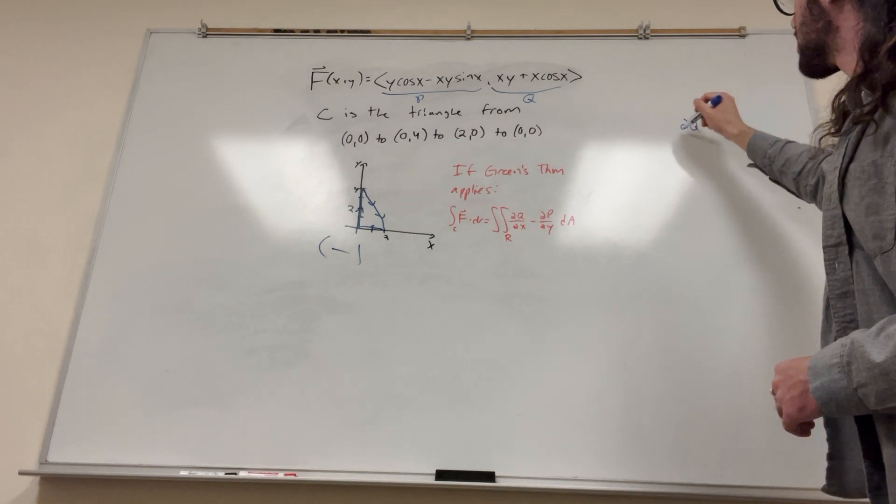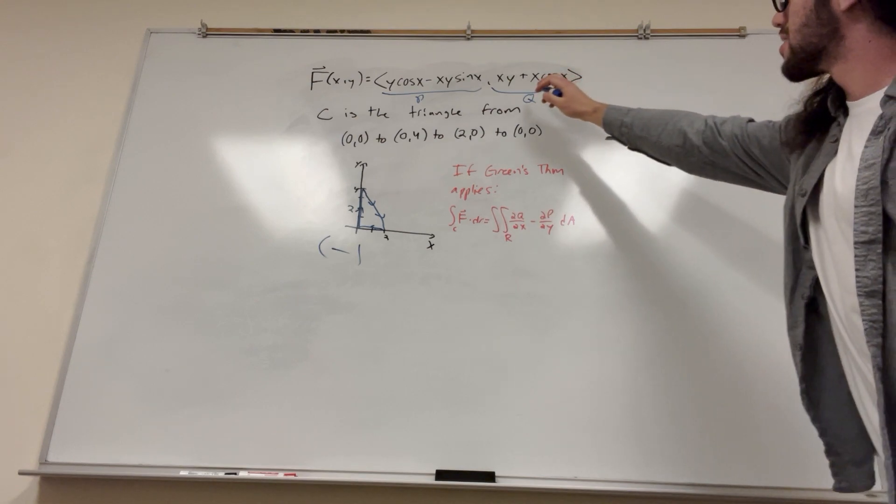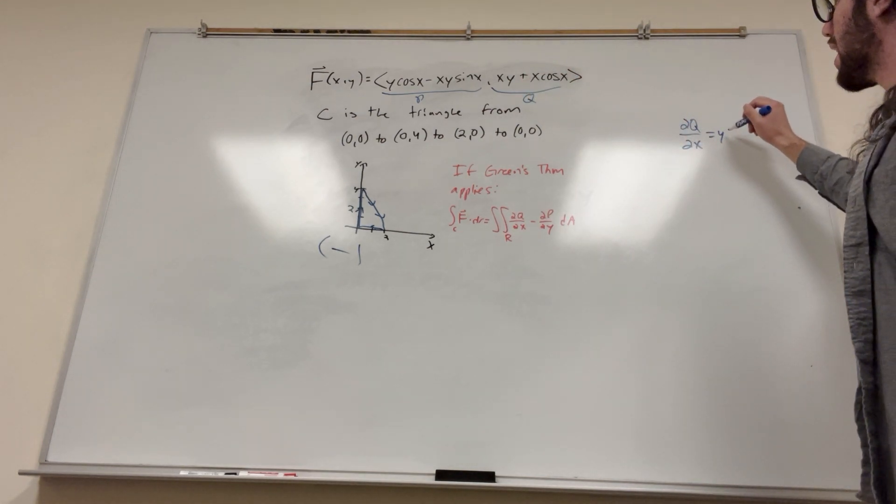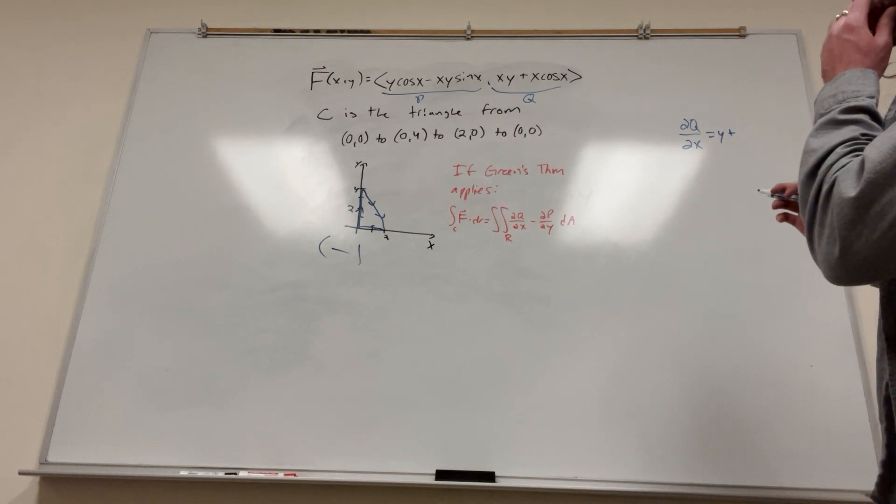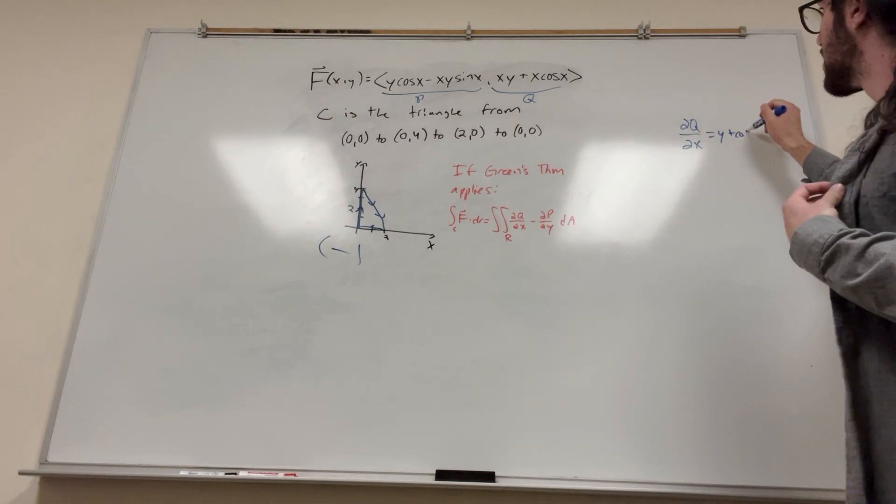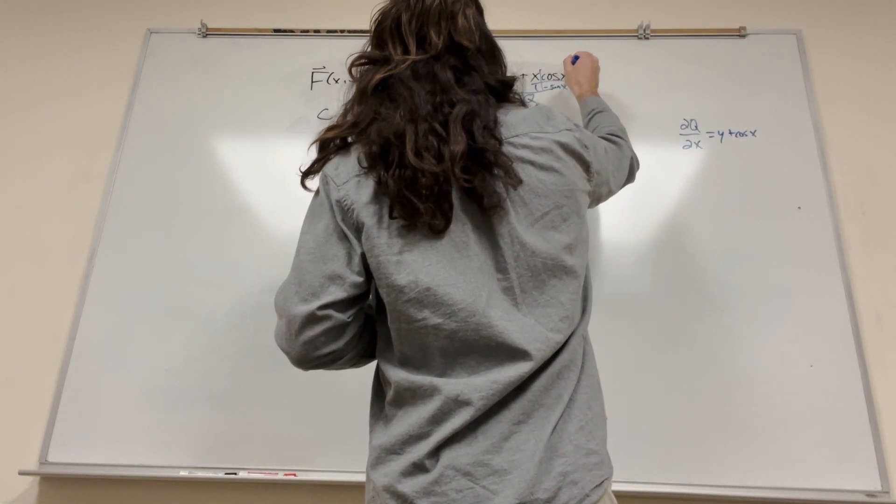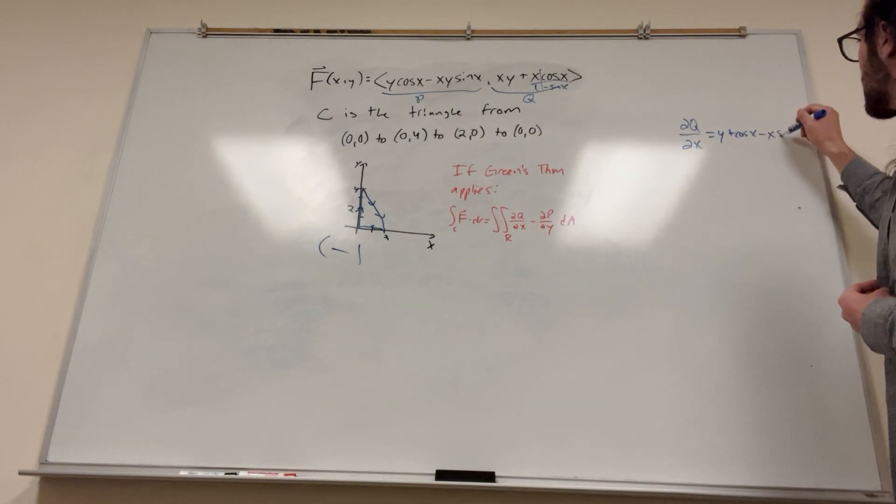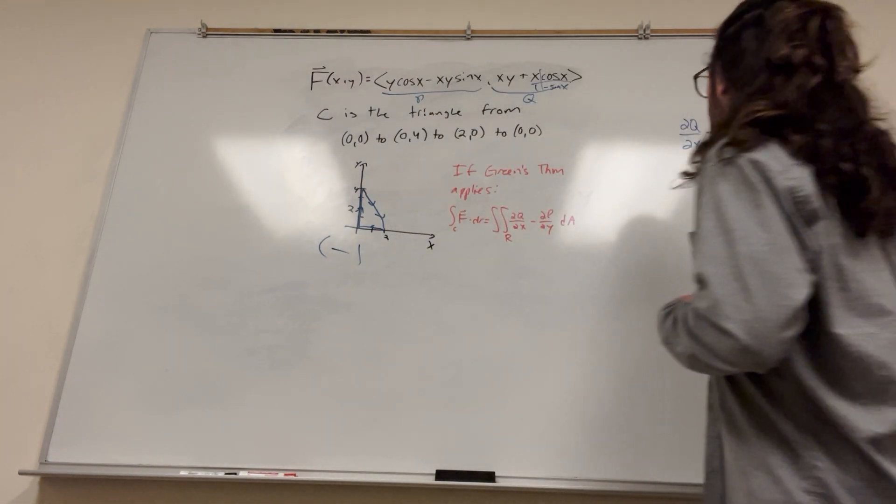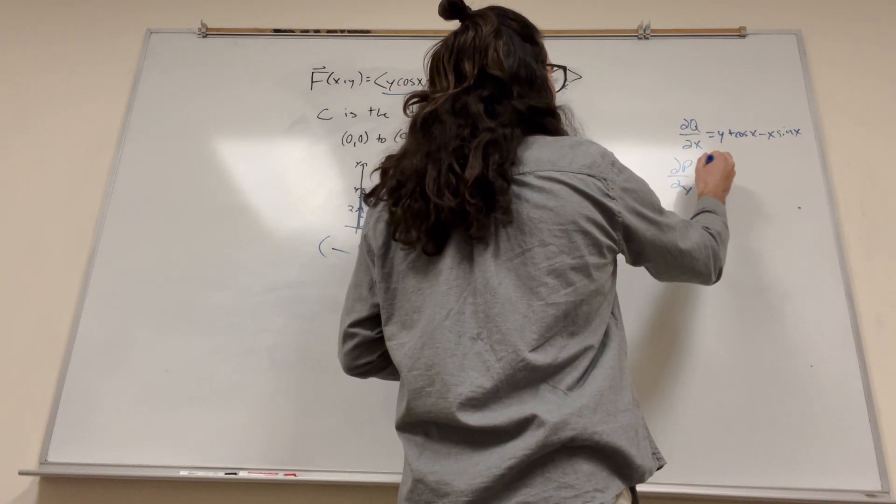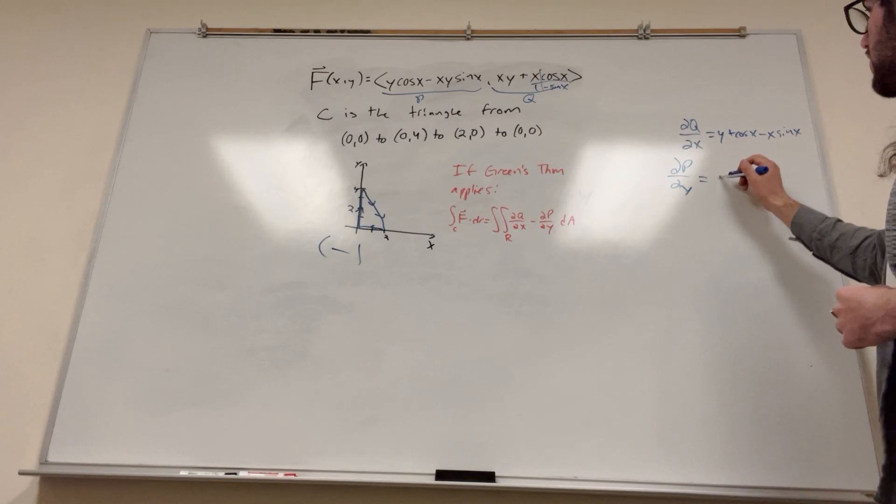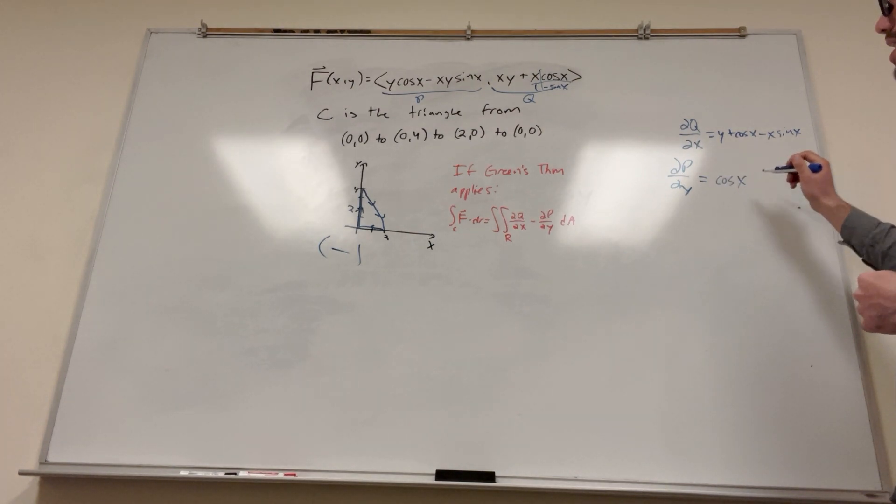So derivative of Q with respect to x, I like to do Q first because it comes first. So this with respect to x is going to be y plus, and of course you have to do a little bit of product rule here, so it's going to be cosine of x. Let's set up our little thing. So it's going to be 1 and then minus sine of x. So it's going to be cosine of x minus x sine of x. And then our derivative of P with respect to y is going to be equal to cosine of x minus x sine of x.